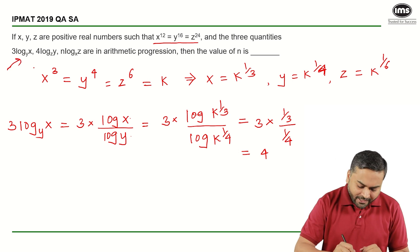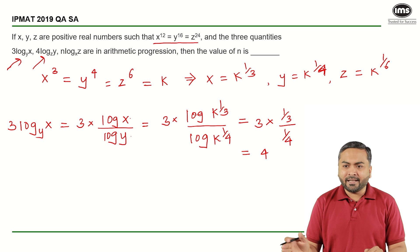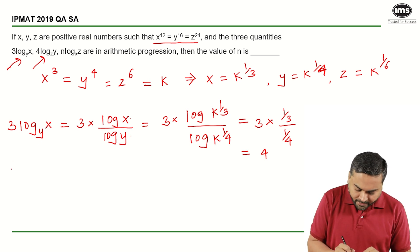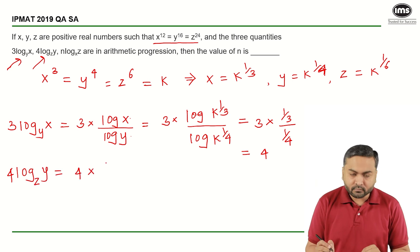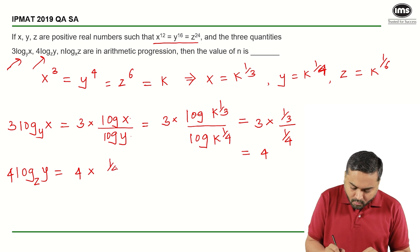Now once I have got the value of the first expression, I can get this value without writing everything. So if I look at 4 log y to the base z, I know that it will be 4 times 1 by 4 upon 1 by 6, which equals 6.